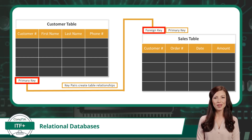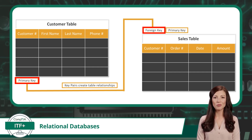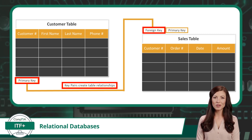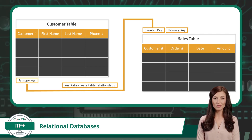Now, in the sales table, we have something called a foreign key. This is a special kind of key that connects or refers back to the unique identifier in the customer table. This customer table can also be called the parent table in this type of relationship. The foreign key helps us link each sale to a specific customer in the customer table. When we connect the primary key in the customer table to the foreign key in the sales table, we create a relationship between the two tables. Now we can easily see which customer made each purchase.